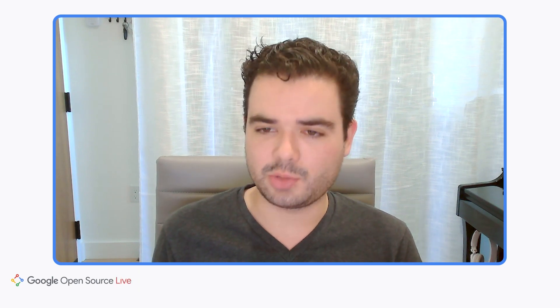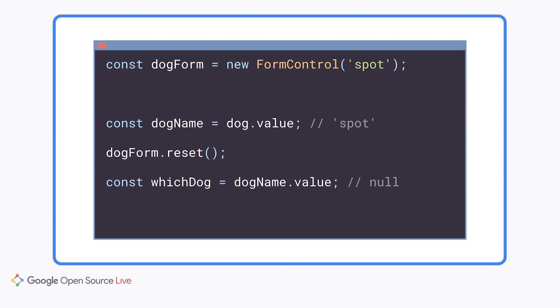One of the trickiest backwards compatibility issues with typed forms relates to resetting controls. Consider the simplest possible form — just a single control containing a string. You might expect the type to be just string, but there's a tricky detail: when you're working with a form control, you can call reset at any time, and when that happens the control immediately becomes null. So you can't always assume the value is a string, because any caller could set it to null. In previous Angular versions this would crash at runtime, but Angular now protects you — the type of the control will be inferred as string or null.